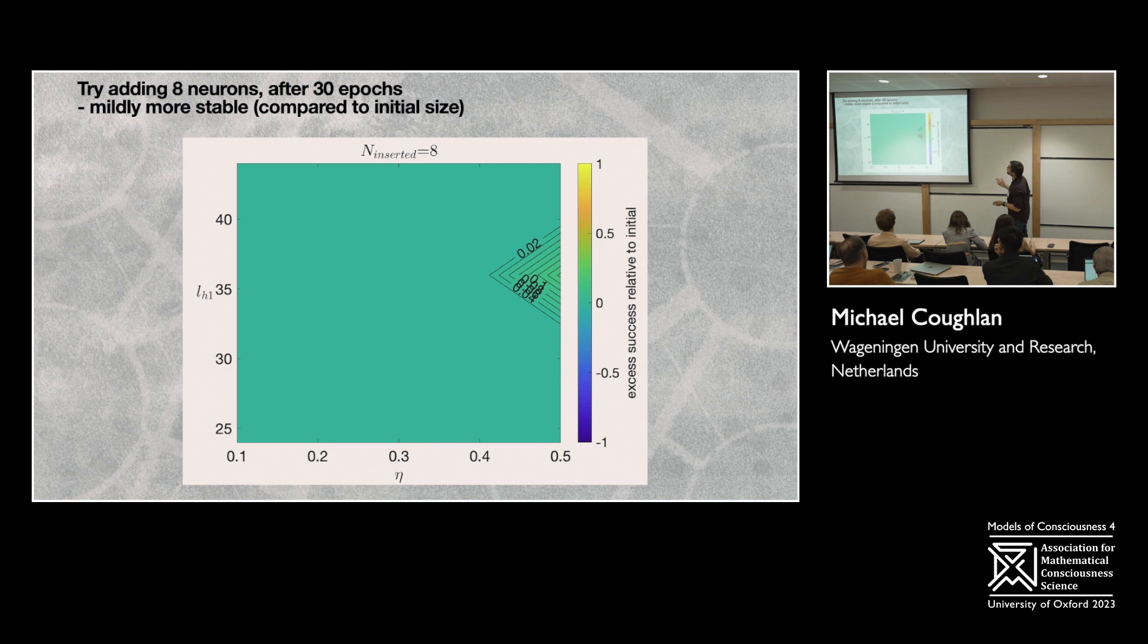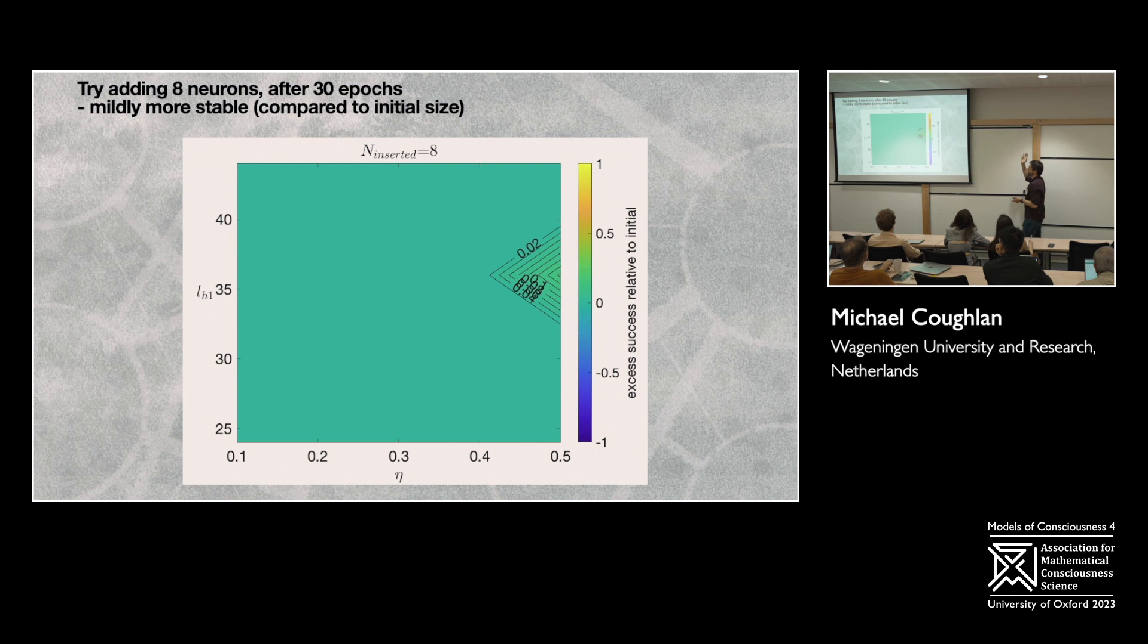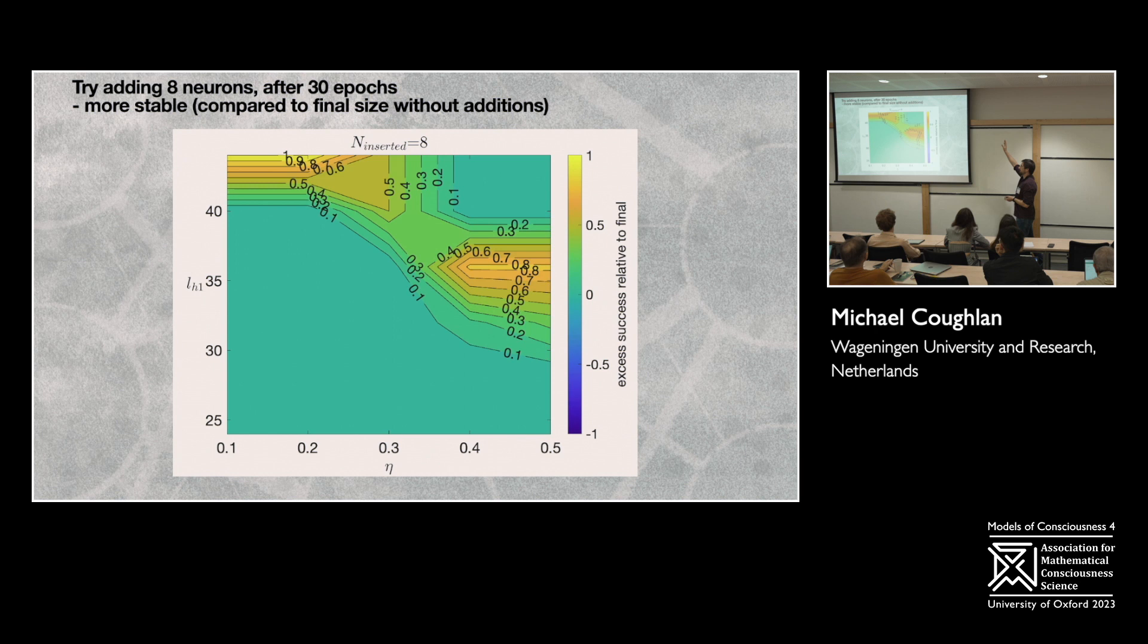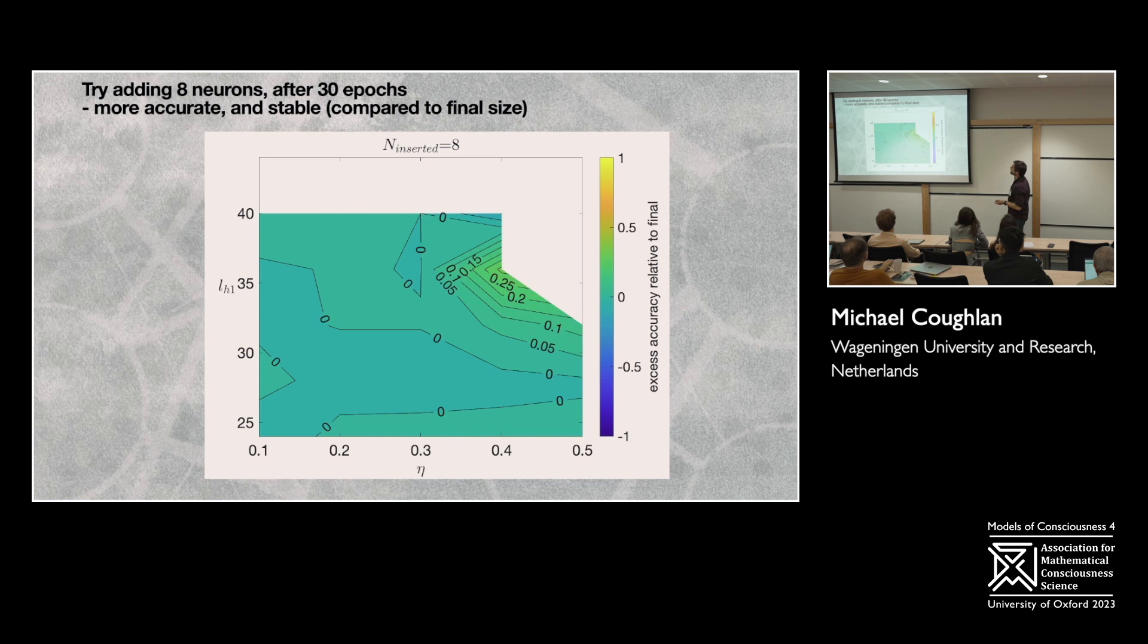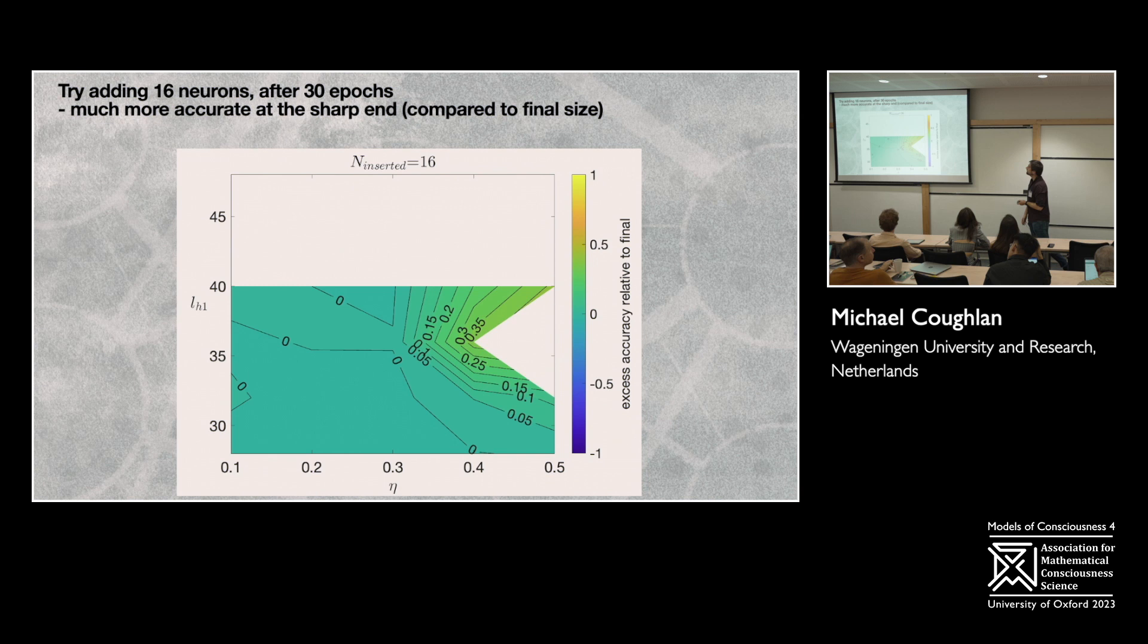Then this is another case of we add in eight neurons, four to each layer, and we get a similar sort of, this is compared to the initial size. It is mildly more accurate. It doesn't really matter, and it is mildly more stable. So really that the effect is when we compare to starting with a larger network and as we get really up towards a more unstable regime. And then looking at a bigger perturbation, 16 neurons instead of eight, we get an even larger effect whereby you can tolerate even much larger later sizes of the final network and that the neurogenesis case will be much more stable and then a bit more accurate.